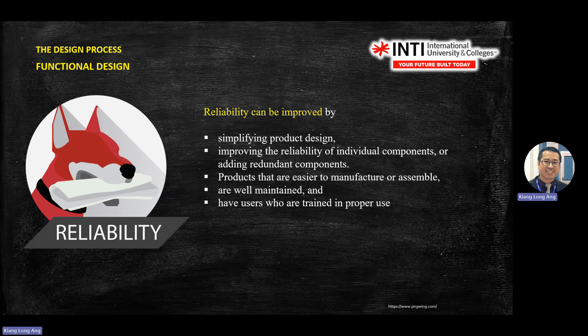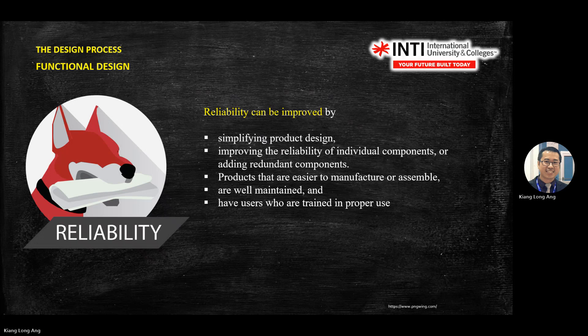There are three steps to improve reliability. First, simplified design — improve the reliability of individual components. If it's a series system, you improve individual components. Or, you can have a backup. You can also design the manufacturing process to be easier to maintain, or train the user to use it properly.